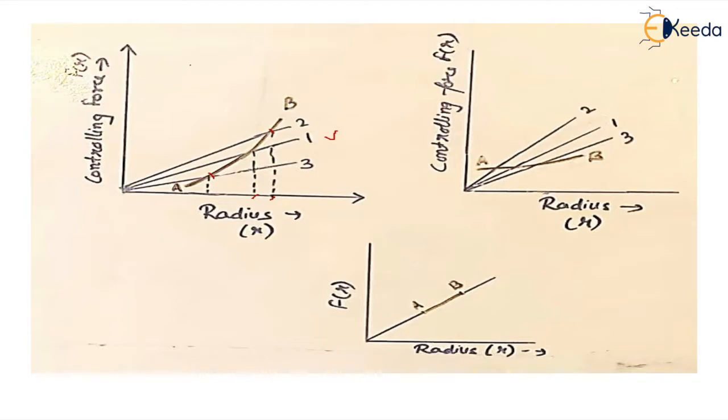So this is the stable condition or the desired condition. What is stability for a governor? When speed increases, the supply of fuel should decrease, and this happens when the radius increases. When speed decreases, radius also decreases and it increases the supply of fuel. So this is the stable condition for a governor.